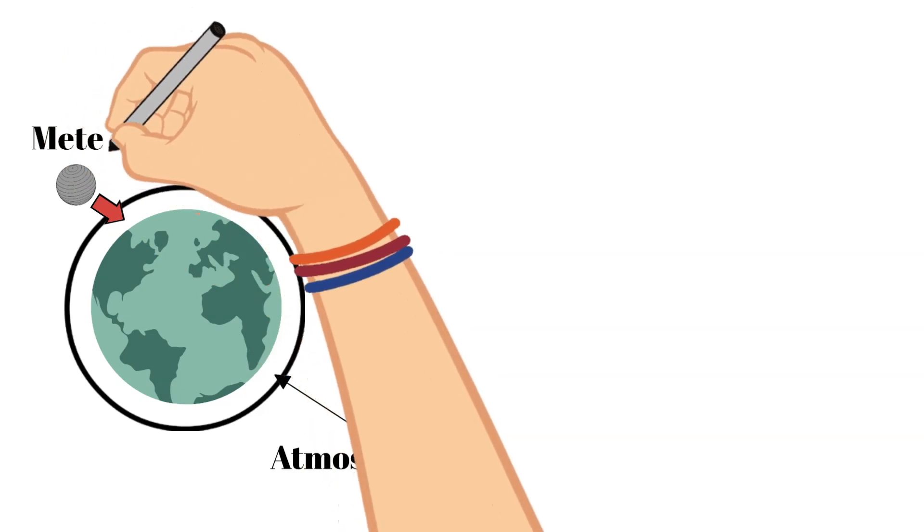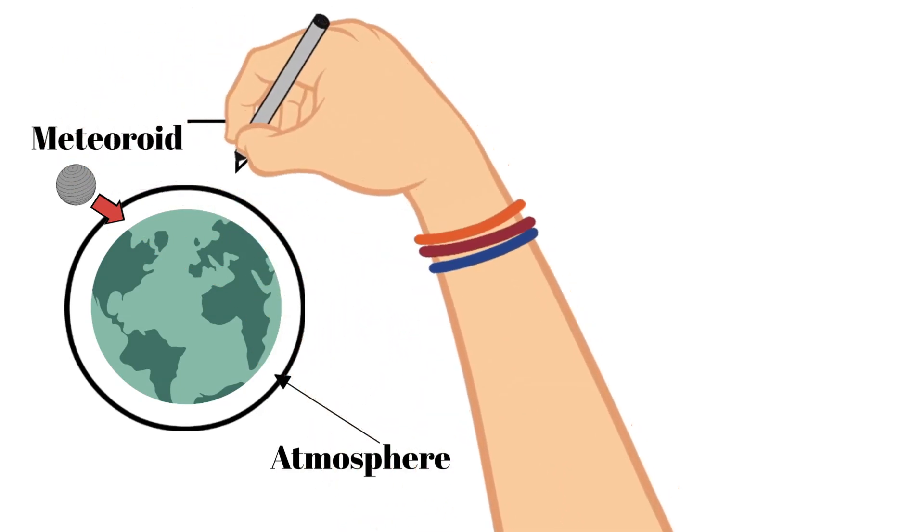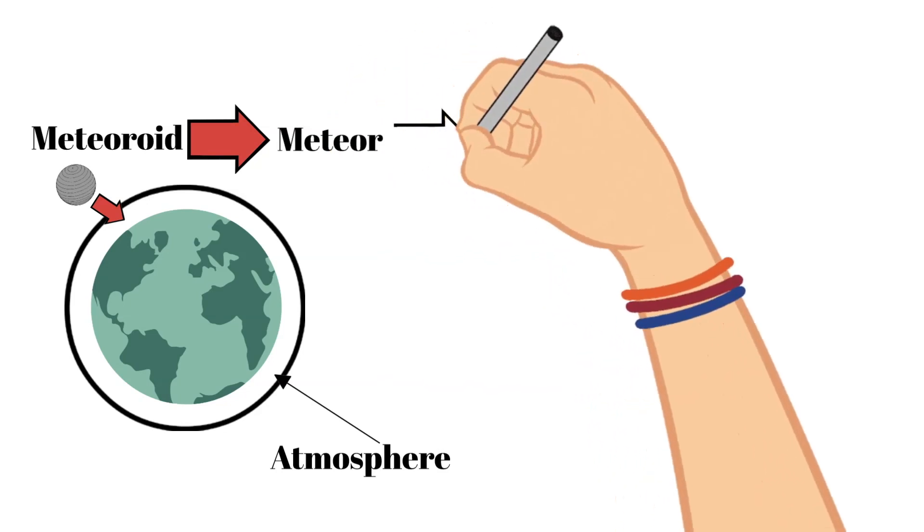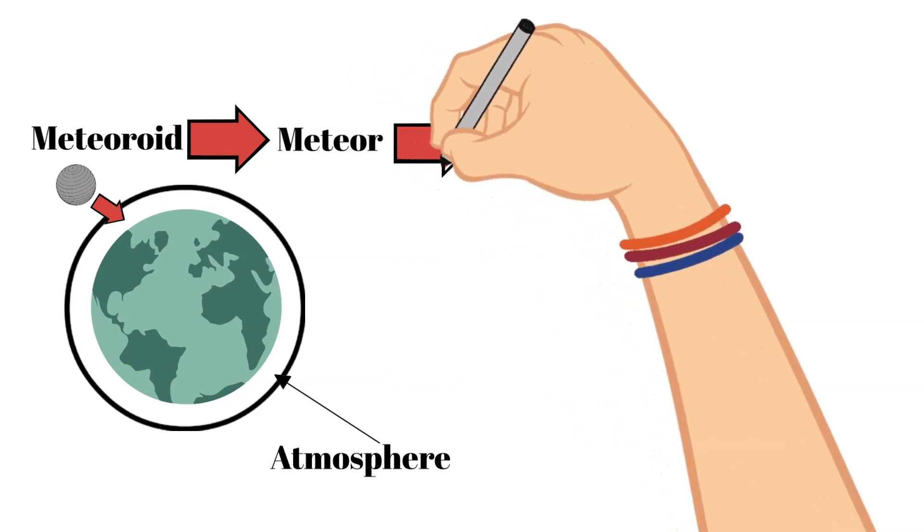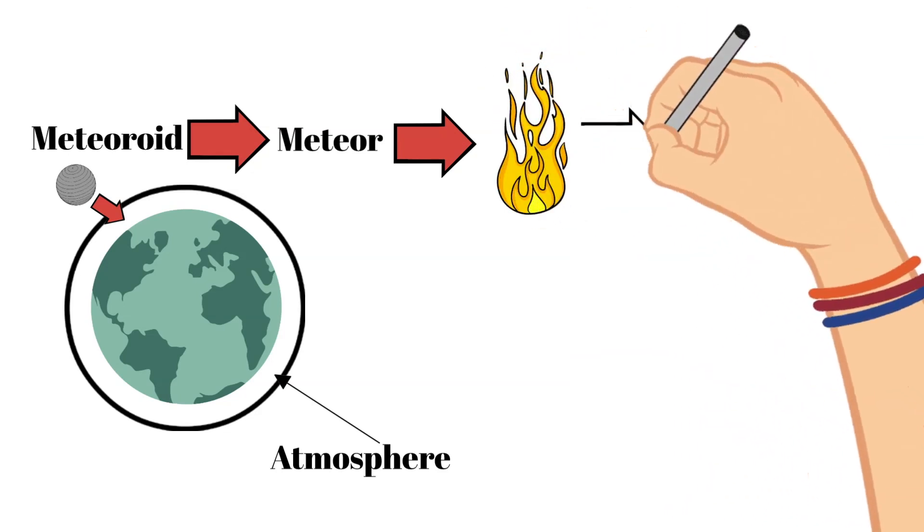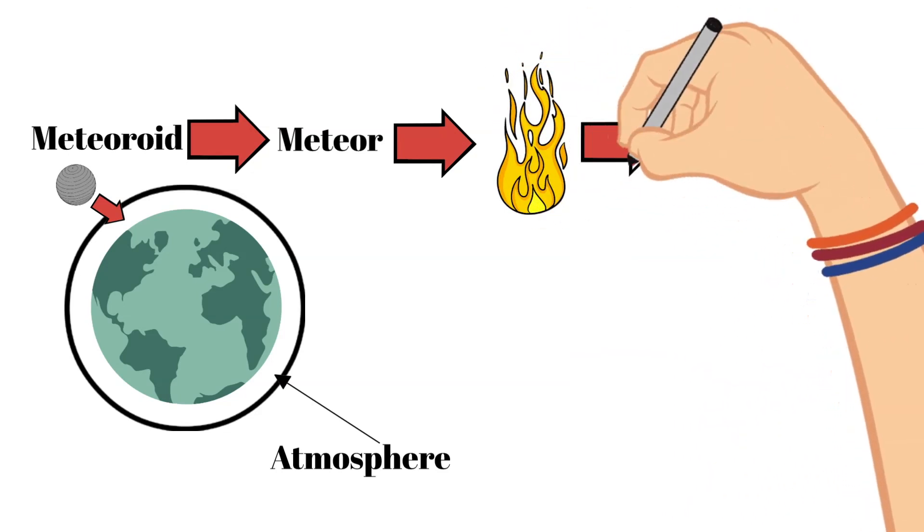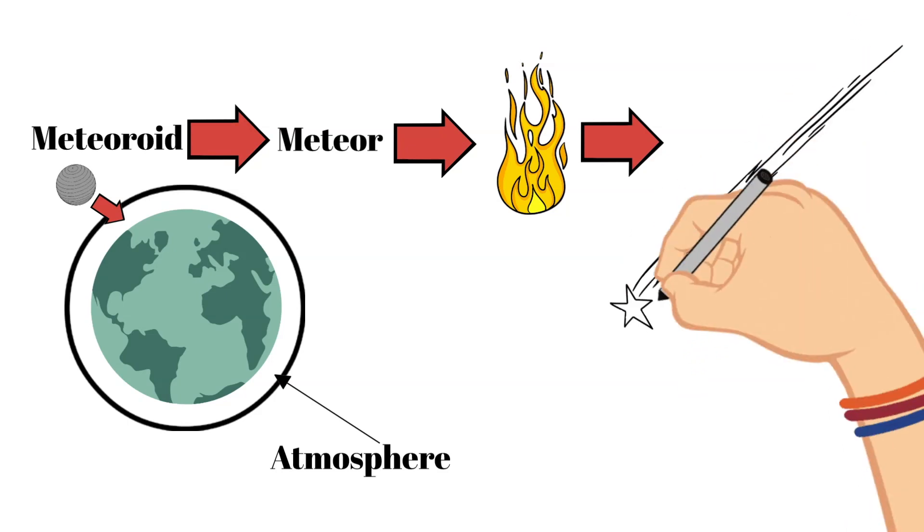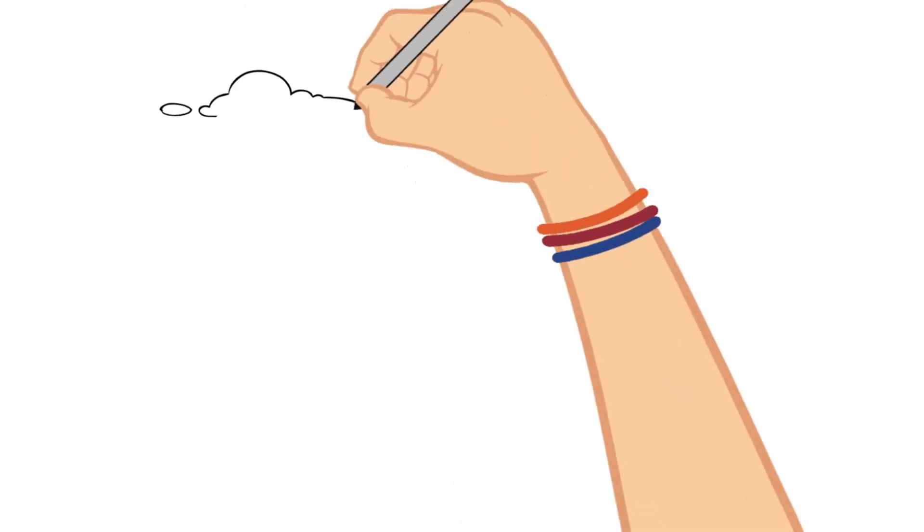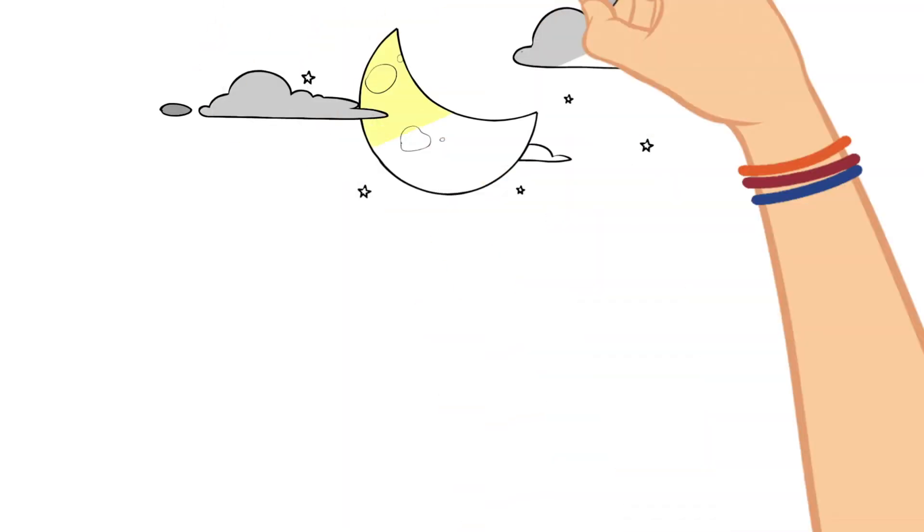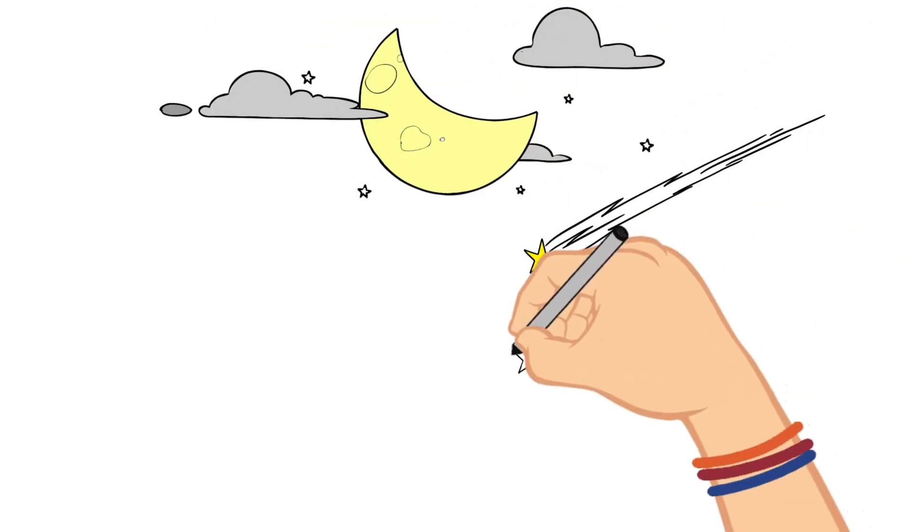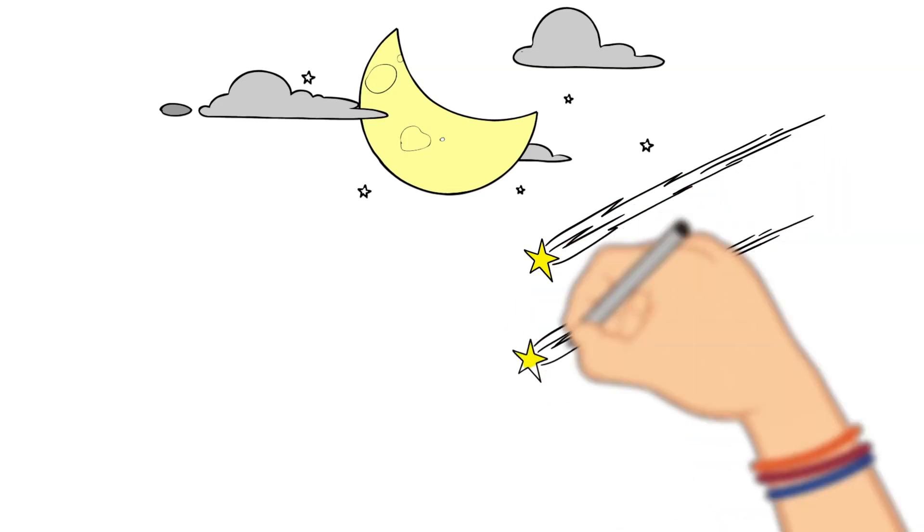This meteor typically enters Earth's atmosphere at a very high speed and burns up in the process, creating a streak of light that we refer to as a shooting star. So in reality, if you've ever seen a shooting star in the night sky, you have most likely actually witnessed a meteor passing into and then burning up in our atmosphere.